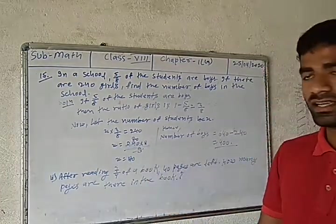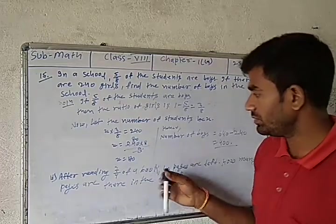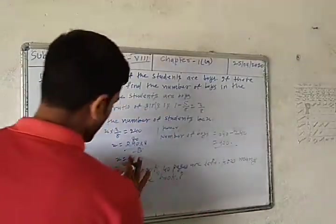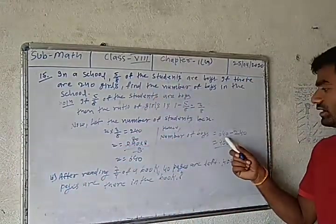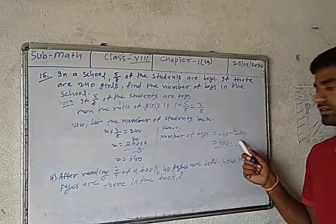Solving this equation, we get x = 640. So the number of boys is 640 - 240 = 400.